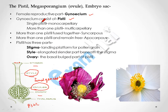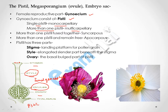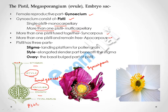If a single pistil is present in the flower it is called monocarpillary, and if more than one pistil is present it is called multicarpillary. If more than one pistil is fused together it is called syncarpous — as you can see in this diagram, more than one pistil is fused together. If more than one pistil remains free then it is called apocarpous — as you can see in this diagram, the pistils are remaining free.